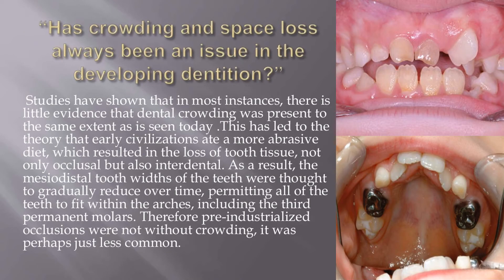Studies have shown that in most instances, there is little evidence that dental crowding was present to the same extent as is seen today. This has led to the theory that early civilizations ate a more abrasive diet, which resulted in the loss of tooth tissue, not only occlusal but also interdental. As a result, the mesiodistal tooth widths were thought to gradually reduce over time, permitting all teeth to fit within the arches, including the third permanent molars. Therefore, pre-industrialized occlusions were not without crowding — it was perhaps just less common.